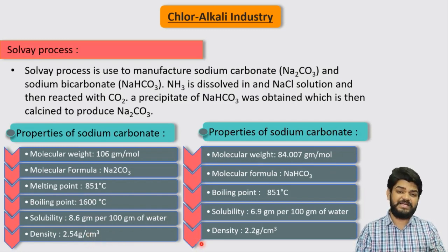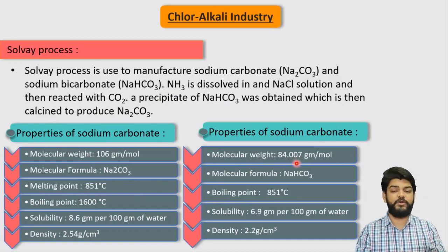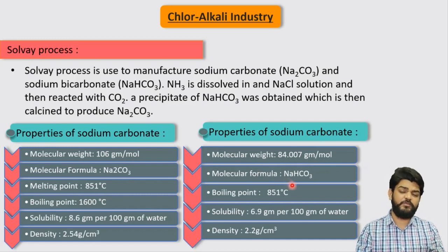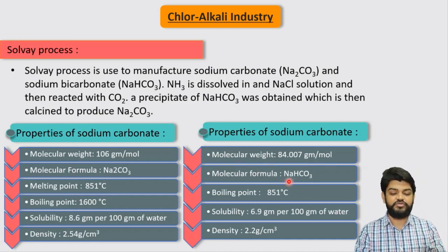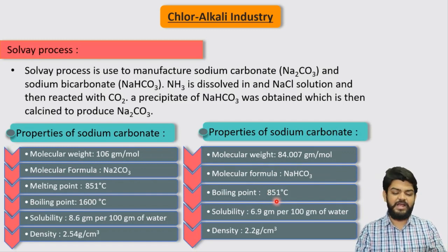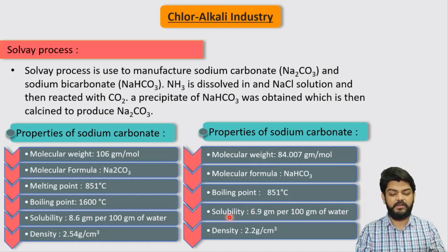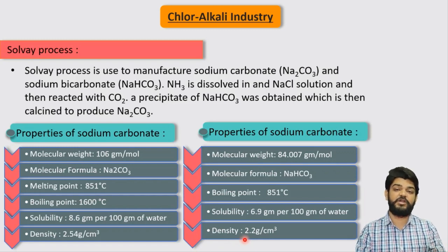Now let us discuss the properties of sodium bicarbonate. Its molecular weight is 84.007 g/mol and its molecular formula is NaHCO3. Its boiling point is around 851°C. Its solubility is less than that of sodium carbonate — only 6.9 g per 100 g of water. Its density is also lower than sodium carbonate, at around 2.2 g/cm³. These are the properties of both chemicals and can be asked in MCQ exams.